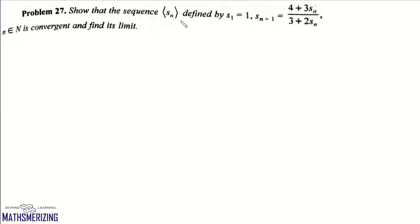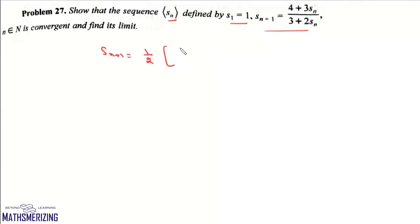The question is: show that the sequence Sₙ defined by S₁ = 1 and Sₙ₊₁ = (4 + 3Sₙ) / (3 + 2Sₙ) is convergent and find its limit.